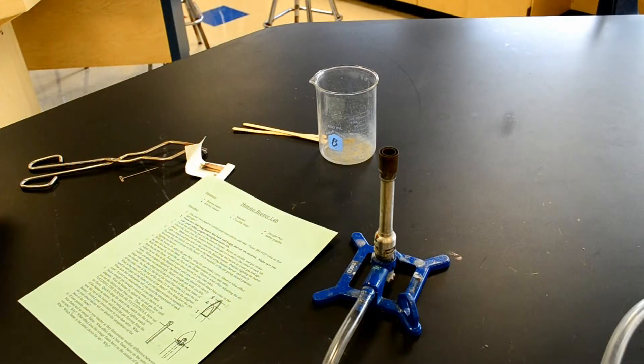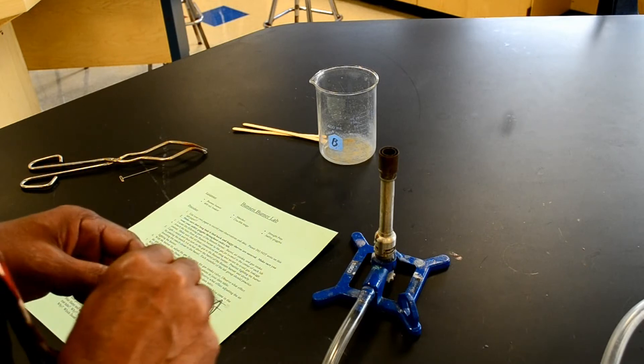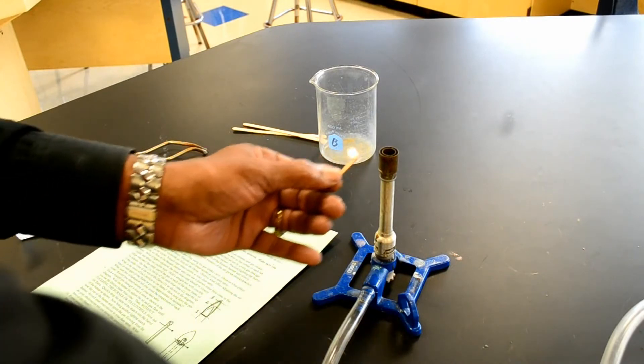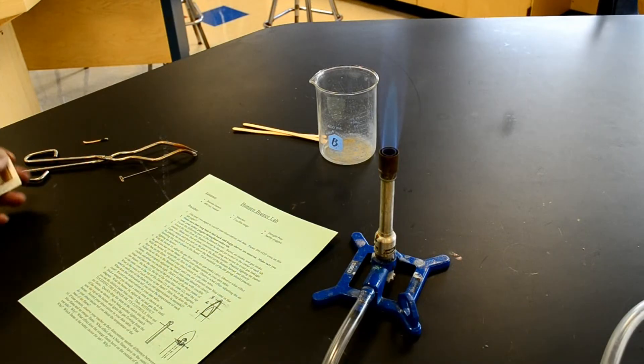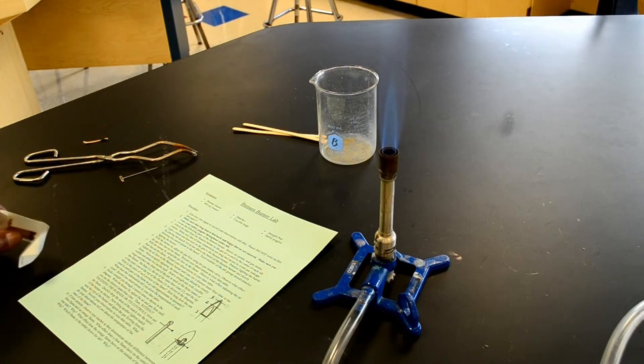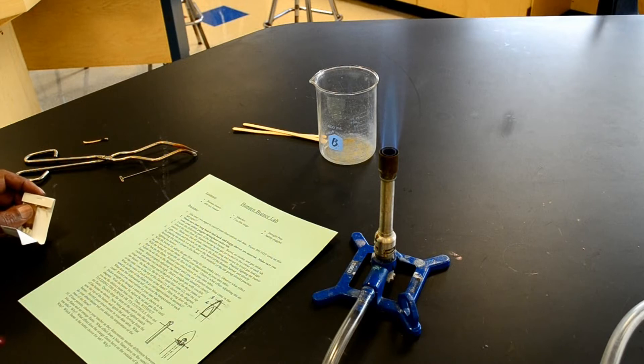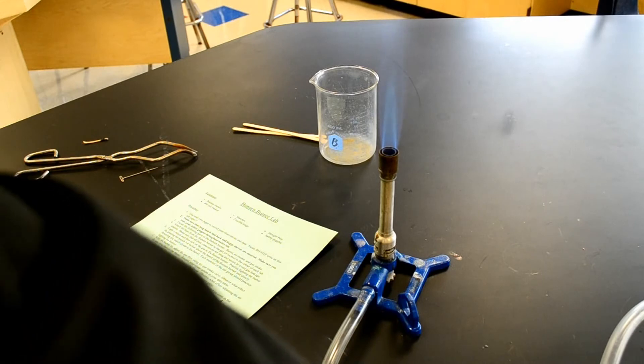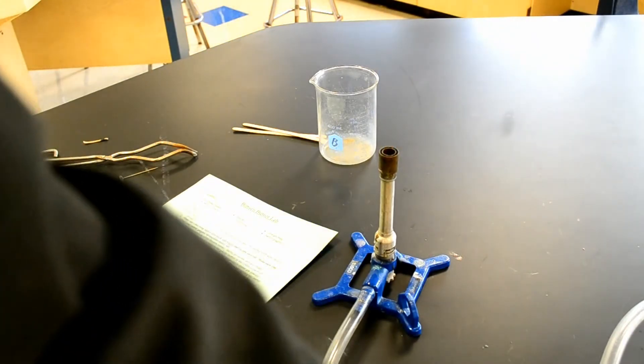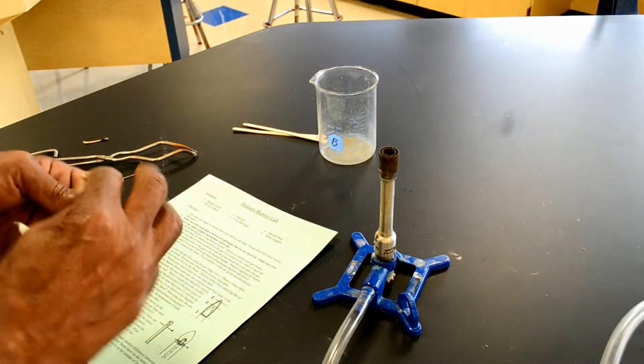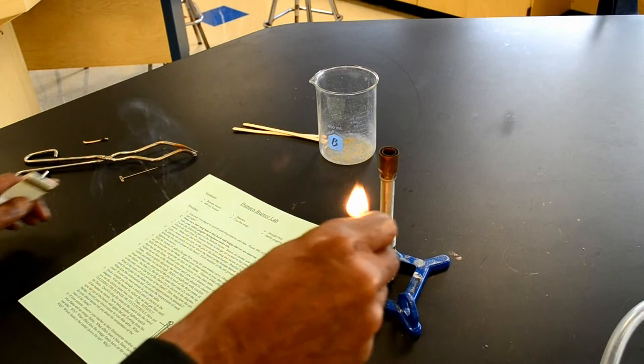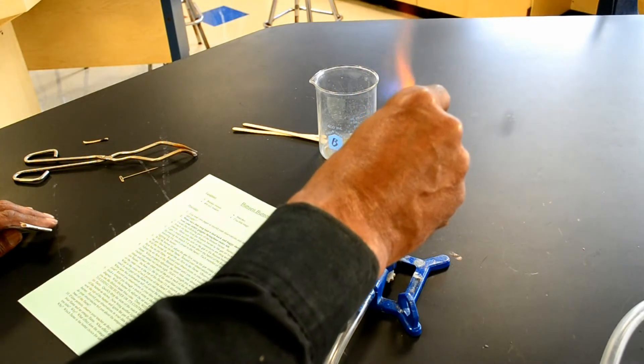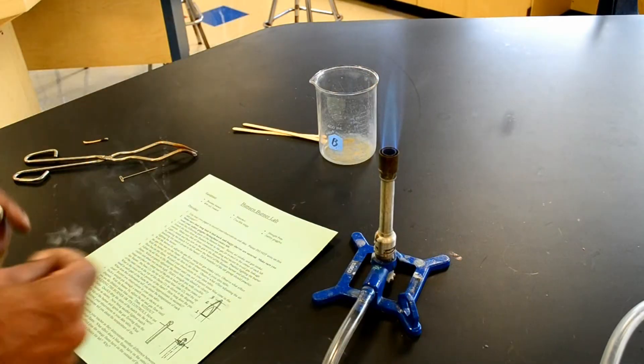Now it says light a match. Turn on the gas to the burner. Then it says practice lighting the burner by placing the match five to six inches above the burner, the barrel of the Bunsen burner, and slowly lowering the match to the barrel. Let's try that. I'm going to turn on the gas, I'm going to light another match, and I'm going to hold it five to six inches above the barrel, lower it to the flame, and you can see that it works.